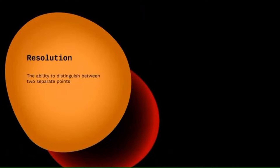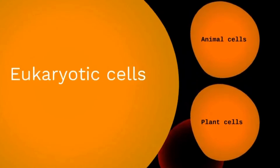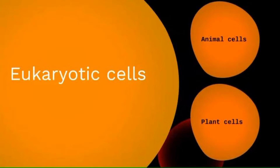Cells can be split into either prokaryotic or eukaryotic cells. Eukaryotic cells contain a clear nucleus enclosed in a membrane — they have a membrane-bound nucleus — and this is really the main defining feature of a eukaryotic cell. Eukaryotic cells are usually cells that make up larger, more complex organisms such as plants and animals. Prokaryotic cells tend to be single cells, and that includes bacteria.